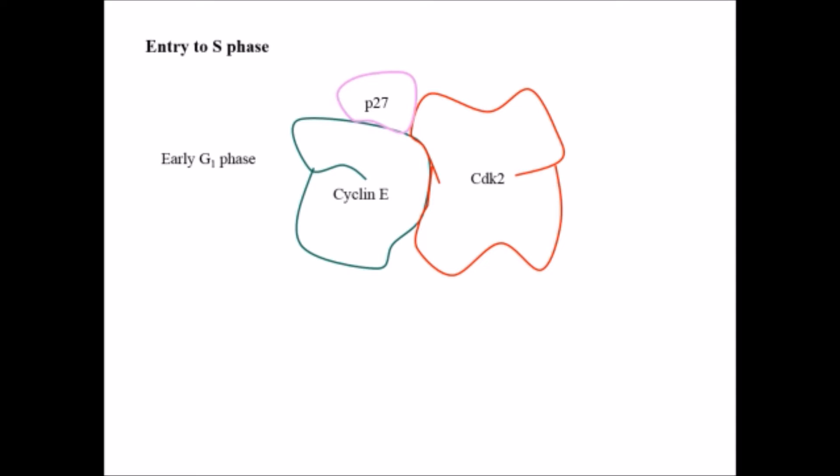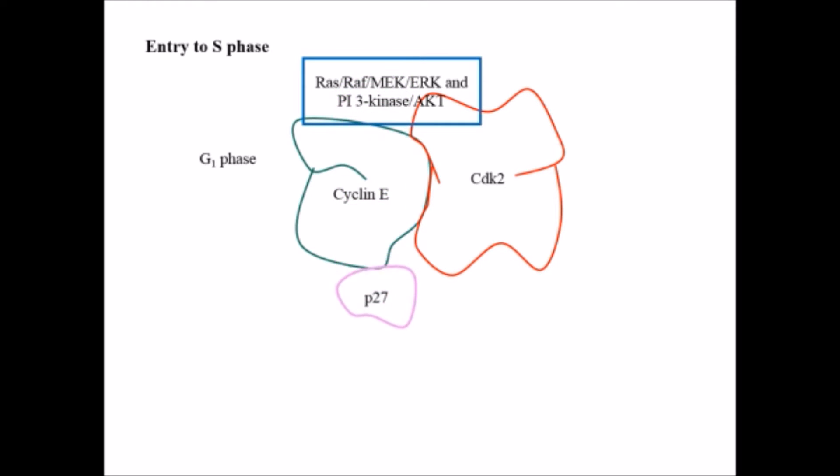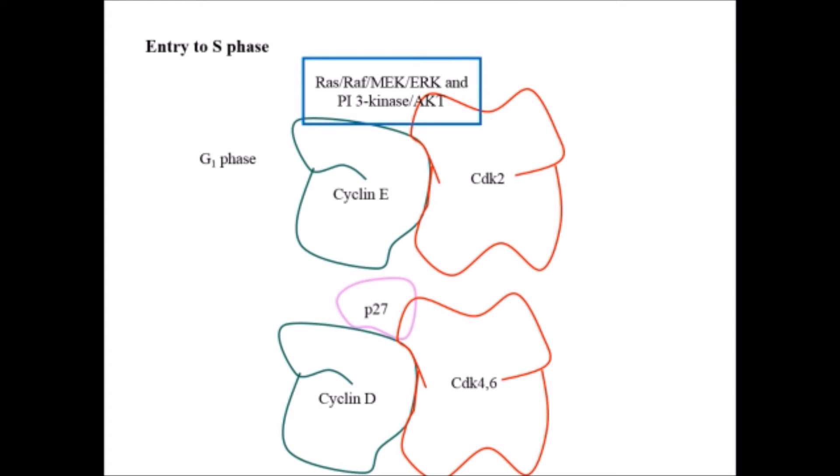For the entry from G1 to S phase, there is also a requirement for decreased concentration of p27. In early G1 phase, p27 gets bonded with the cyclin E-CDK2 complex. But with the advance of G1 phase, once all requirements are verified, signaling molecules Ras, Raf, MEK, ERK, PI3-kinase, and Akt decrease the concentration of p27. In this decreased state, p27 binds to the cyclin D-CDK4/6 complex instead.